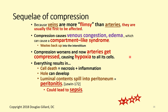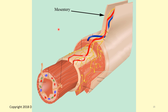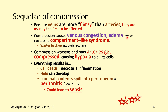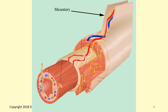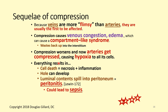Once veins are compressed, blood can't drain from the intestinal wall and edema occurs. Like compartment syndrome, it will start compressing the arteries too, causing hypoxia and cell death. The bacteria in the fecal material run wild, producing gas and causing the bowel to back up further. The bacteria can eventually eat a hole right through the intestine, causing peritonitis — a medical emergency — which can lead to septicemia and death very quickly.